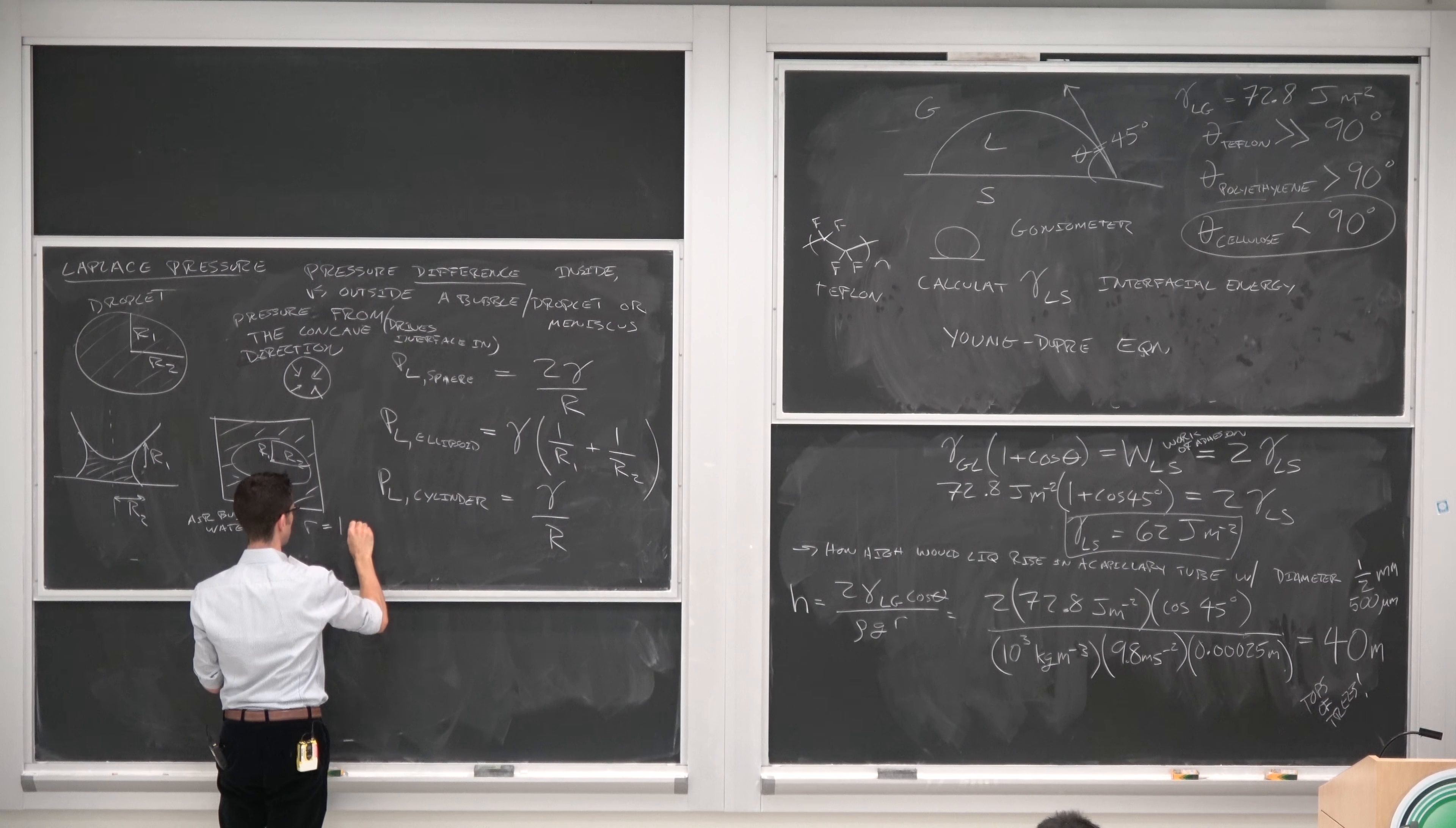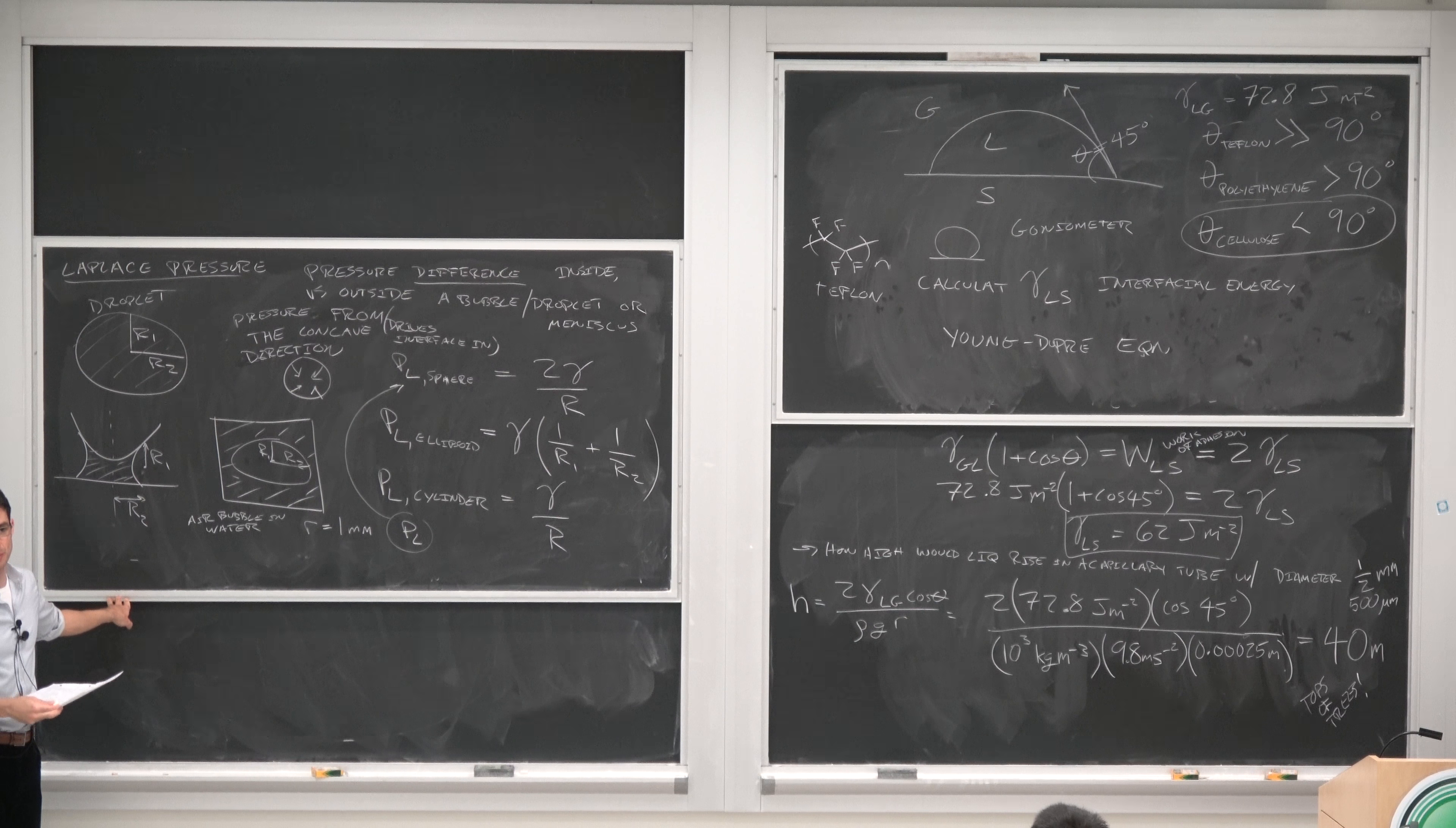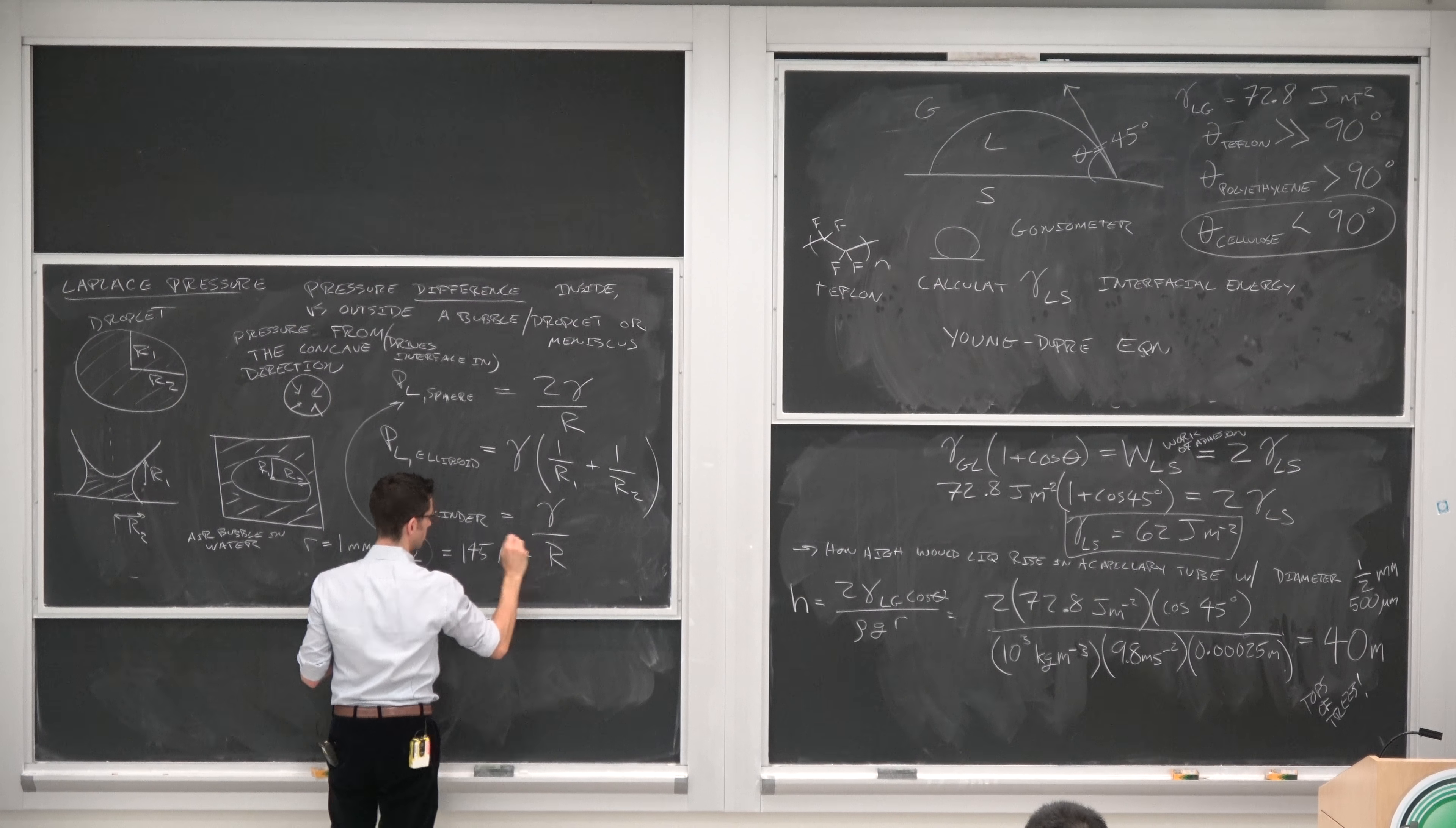So if R equals 1 millimeter, the Laplace pressure, which would just be 2 times the surface tension of water in air, 72.8 newtons per meter or joules per square meter, divided by the radius of the sphere, so 10 to the minus 3 meters, gives you 145 newtons per square meter.